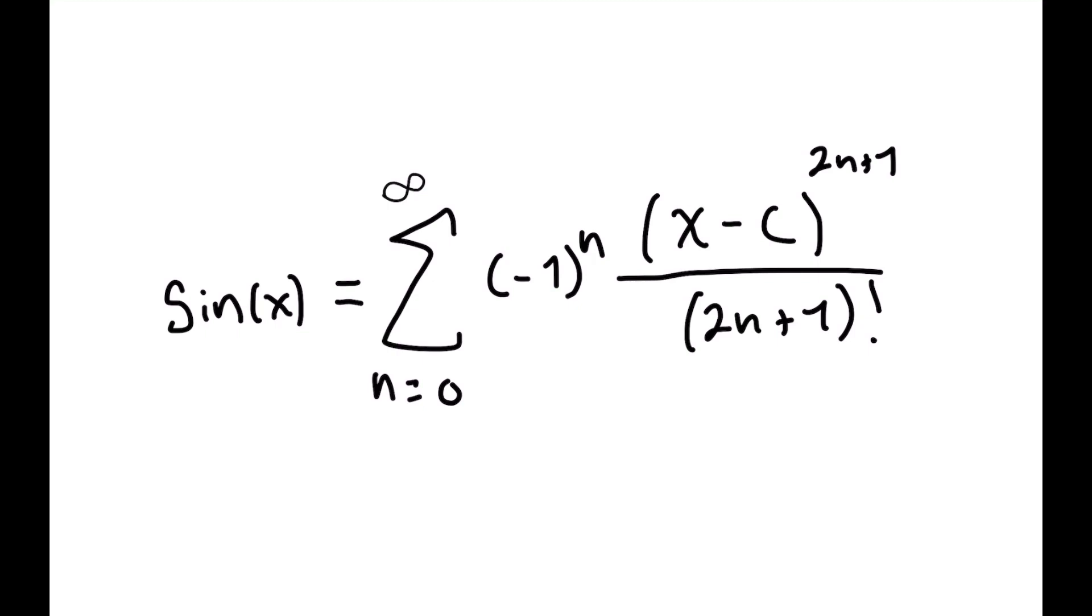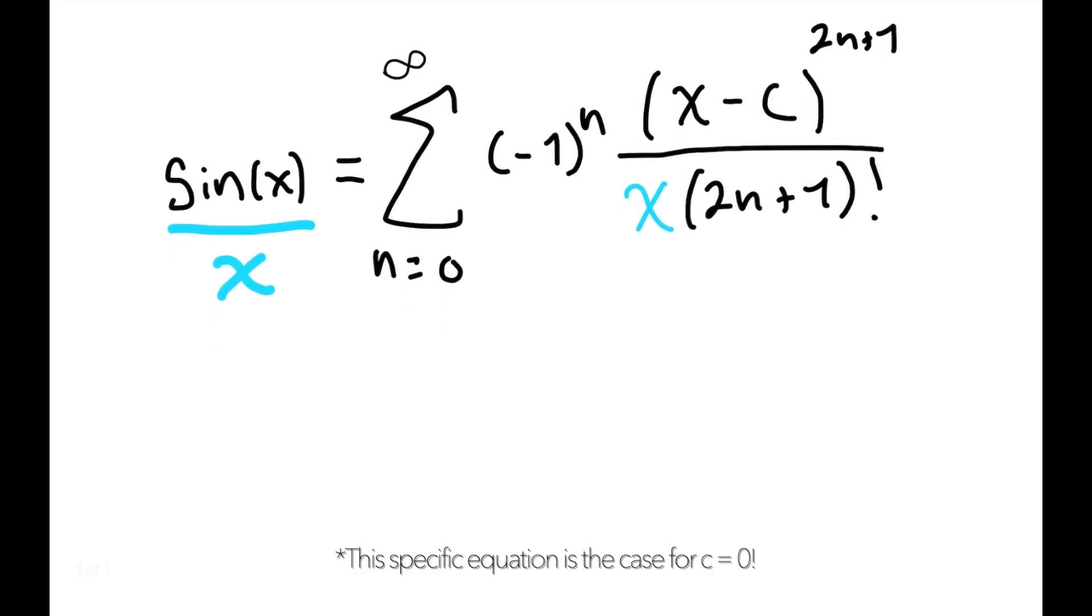You can even modify Taylor series to approximate slightly different functions. For example, the Taylor series of sine of x over x is just the Taylor series for sine of x with each term divided by x. There are a couple more rules we need to follow when doing these transformations, but I'm not going to get into them for now.